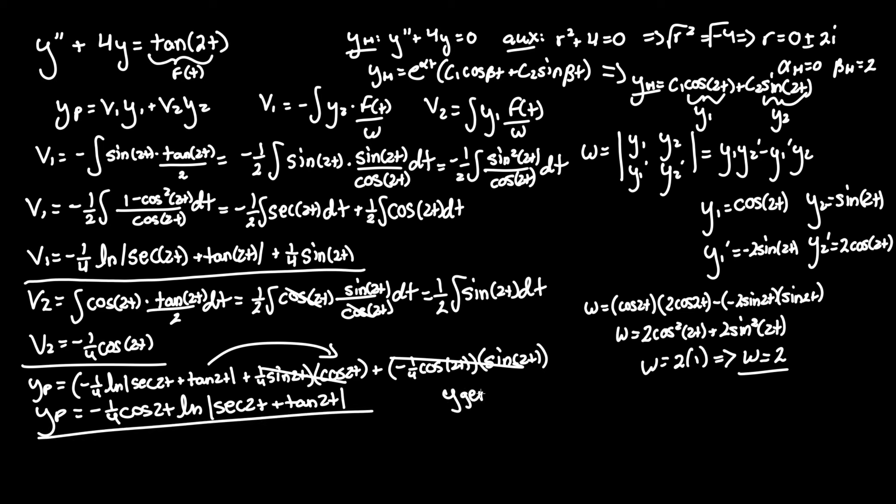And as you know for y general that equals y homogeneous plus y particular. So we just have enough room to write the total solution. Let's start with the homogeneous portion. C1 cosine of 2t plus c2 sine of 2t. Which was what I got from up here. And now we just add this whole thing. So instead of plus we say minus one fourth cosine of 2t ln absolute value of secant 2t plus tan of 2t. Closing the absolute value. I believe that is everything.